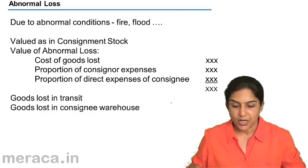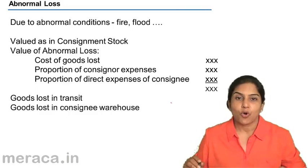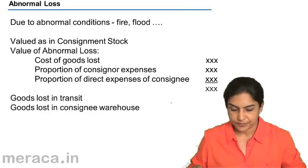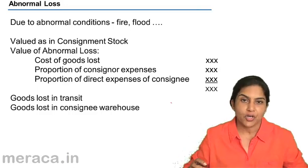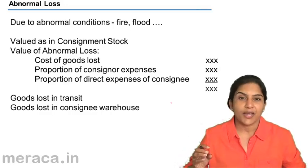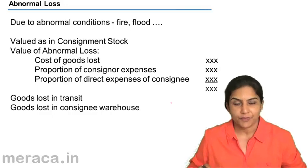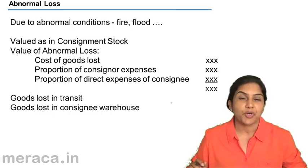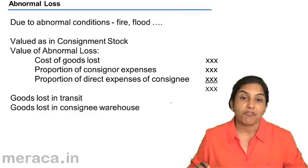Suppose goods have been lost — say in transit they are lost due to some theft and some part of the stock is gone. Abnormal loss is valued; we put a value to the loss and then accounting entries are passed so that the effect of abnormal loss is removed from the consignment account. This is to arrive at the correct profit on consignment — the profit we would have arrived at had all things been normal. Abnormal loss is then transferred to profit and loss account.